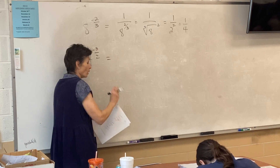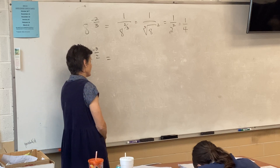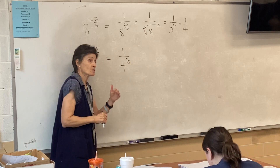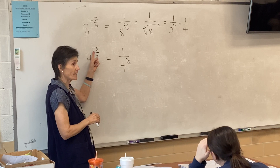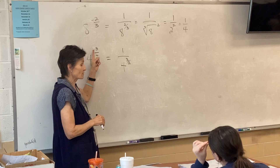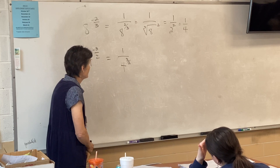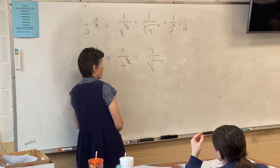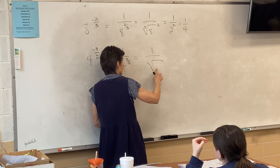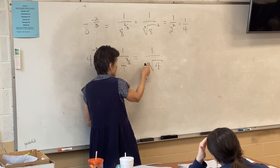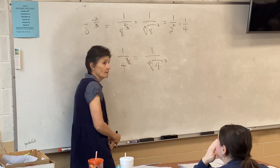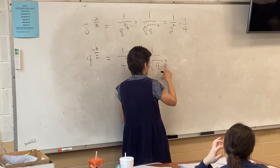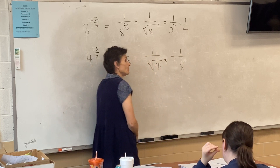Let's go with this one. Same thing — what do we do first? Get rid of the negative by doing one over. So one over four to the three-halves. What does the denominator mean? It's a fraction, so I know it means a radical. What goes in the radical? Four. What's the root? Two. And the power is three. What's the square root of four? Two cubed — two times two times two.